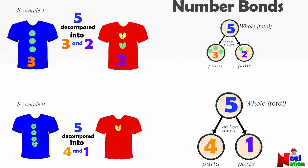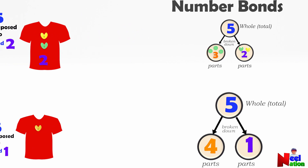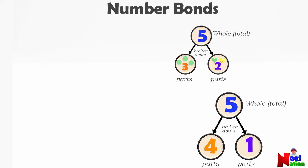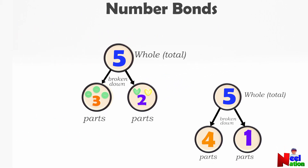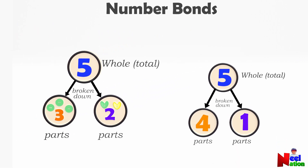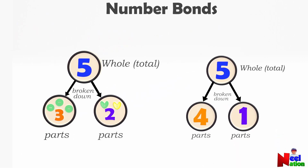Five can be decomposed into three and two. Five can also be decomposed into four and one.